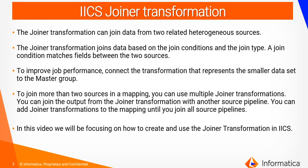Let's get started with a brief introduction of a joiner transformation. The functionality of a joiner transformation is to join the data from two related heterogeneous sources. For example, we can use a joiner transformation to join the account information from a flat file with the data from the Salesforce account object. The joiner filters data based on the join condition, which matches fields between the two sources, and you can create multiple join conditions based on your requirement.